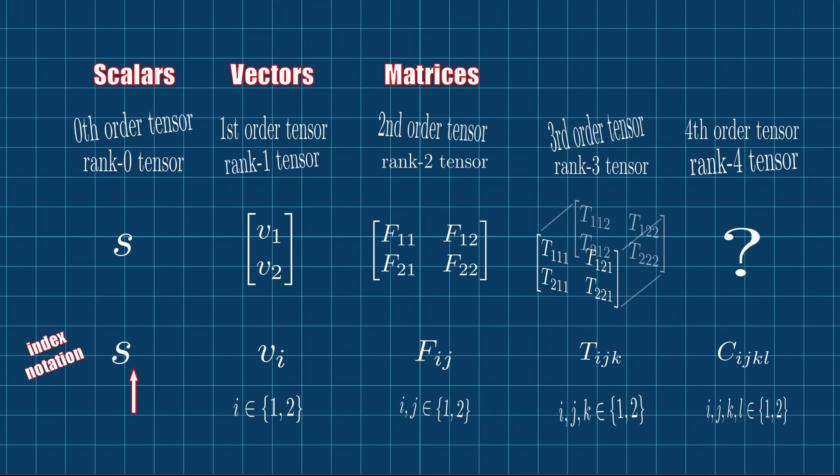Zero-order tensors have zero indices, first-order tensors have one index, second-order tensors two, and so on. So, to summarize, one reason why matrices and tensors are not exactly the same is that matrices always have two indices, but tensors can have arbitrarily many.